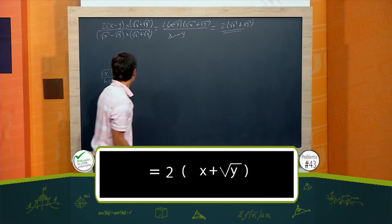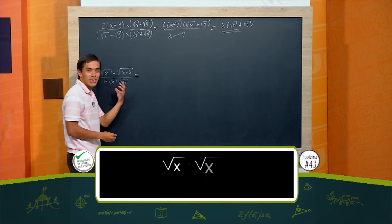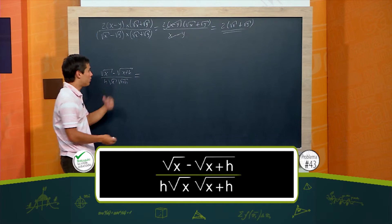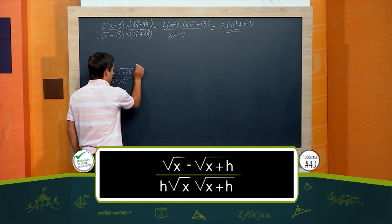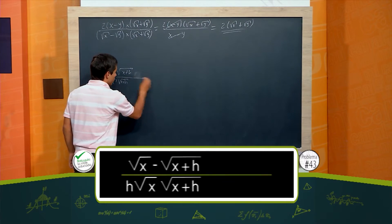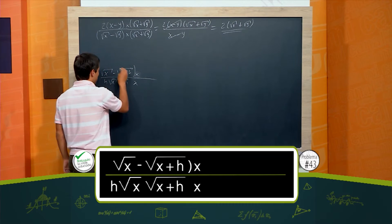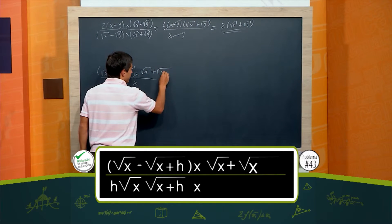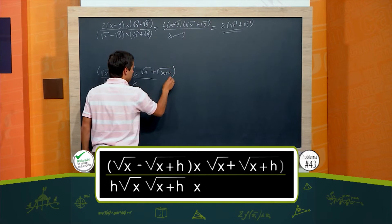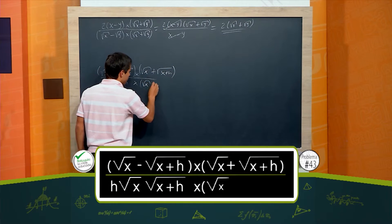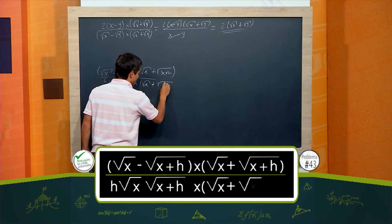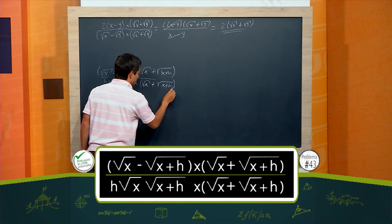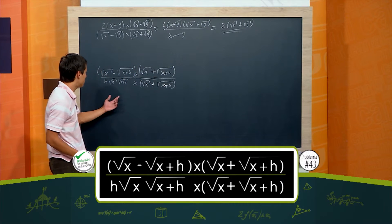Bien, ahora el segundo: vamos a racionalizar ahora el numerador, entonces voy a multiplicar por el conjugado. Me va a quedar multiplicado por raíz de x más raíz de x más h, y aquí raíz de x más raíz de x más h, para que se conserve la expresión, la equivalencia entre las fracciones.